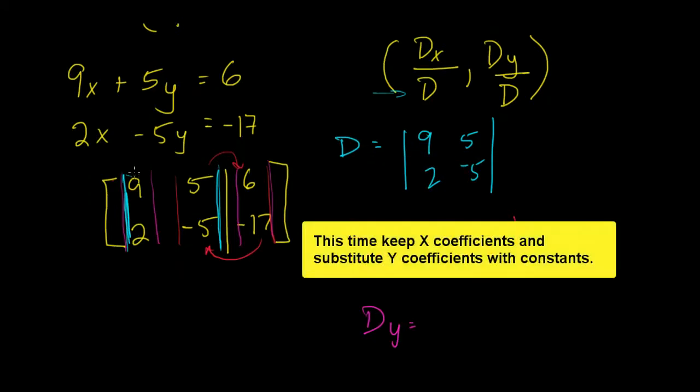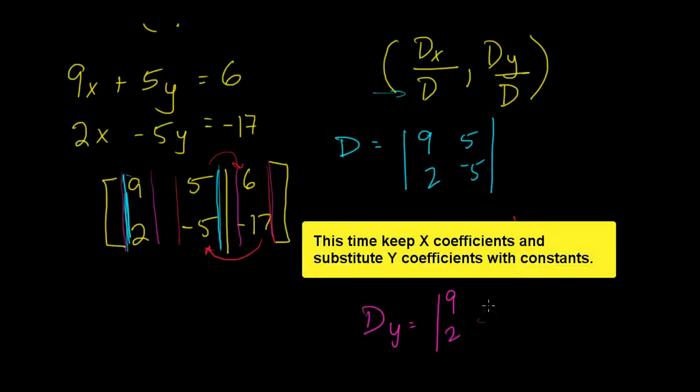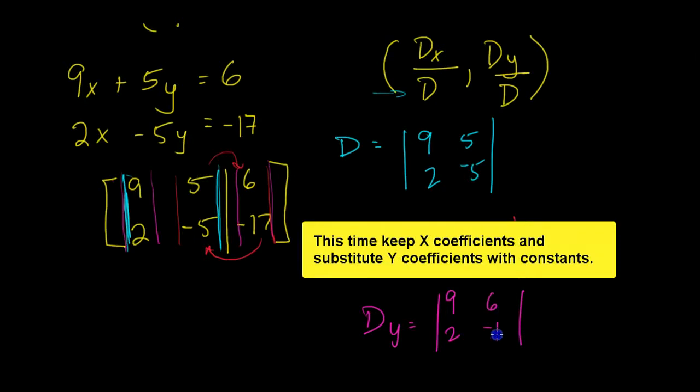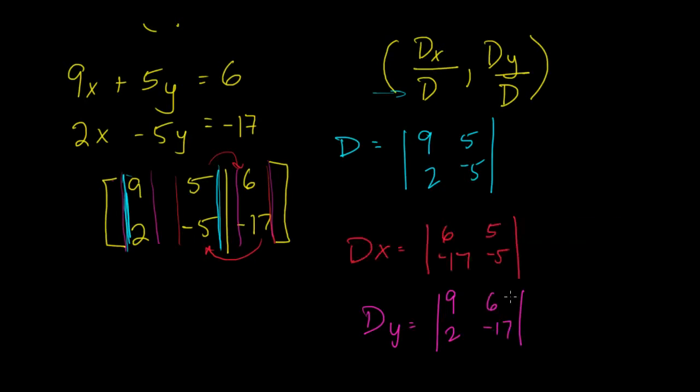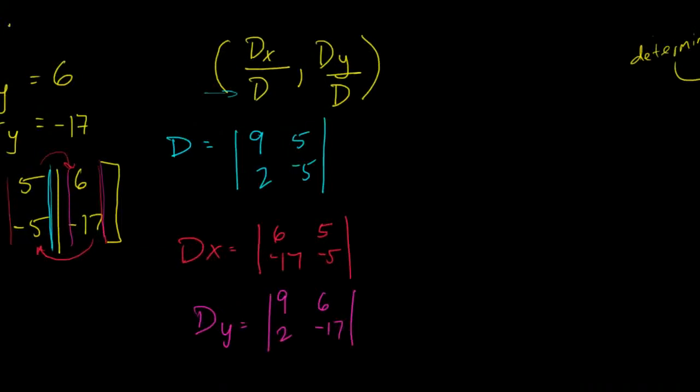And finally, for our d of y, we are going to use the 9 and 2, because we want to find the y's, so we'll leave that one, we'll leave the y's out of it. But again, we'll take that 6 and negative 17, and that will replace our y's. So now I have three 2 by 2 matrices that I'm going to use the determinants from.